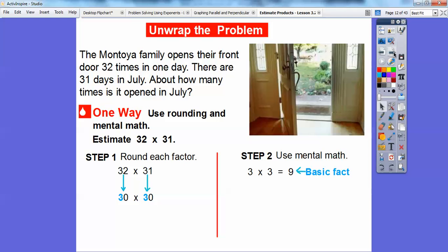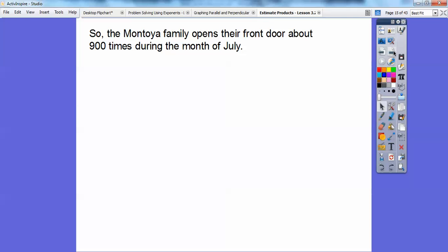So then if we multiply 3 times 3, well everybody knows 3 times 3 is 9. So 30 times 30 is going to be 9 with these two zeros right here. So it's going to be 900 right there. So the Montoya family opens their front door about 900 times during the month of July.